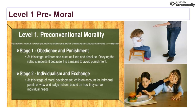The first level contains stages one and two. In stage one — obedience and punishment — children see rules as fixed and absolute. Obeying the rules is important because it is a means to avoid punishment. For example, a kid might say, 'I will tell our parents because if they find out later that I knew, they will get angry and most likely punish me.' So the child wants to avoid punishment.